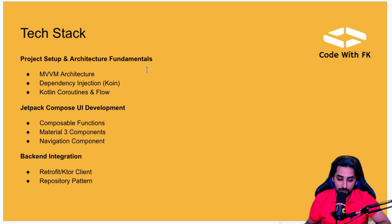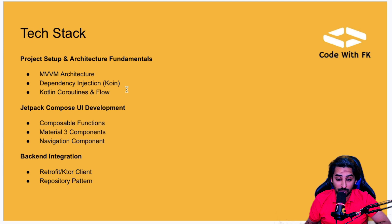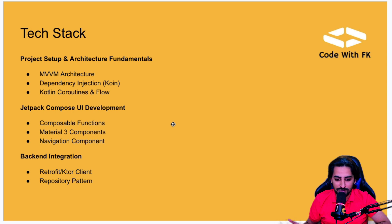For the tech stack, we'll again use MVVM architecture. For dependency injection, this time I'm going to use Koin — we already made a couple of projects with Hilt, so Koin with annotations will be mostly similar. We'll use coroutines and flows for handling background threads, and for UI we'll use Jetpack Compose with Material 3 design.